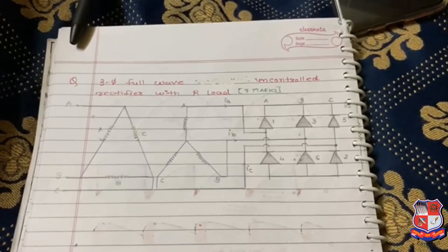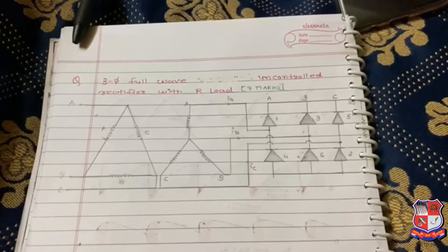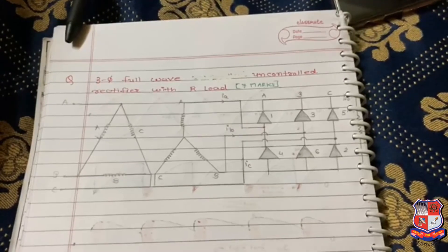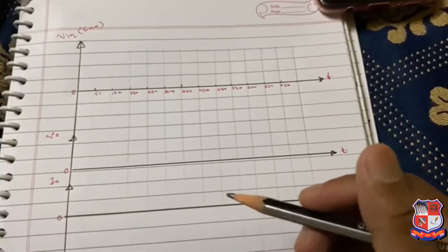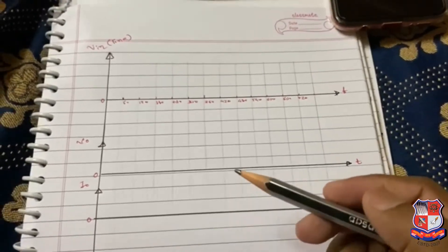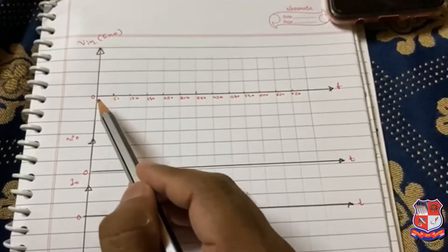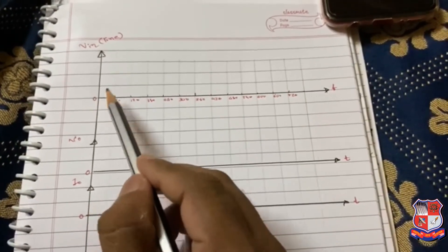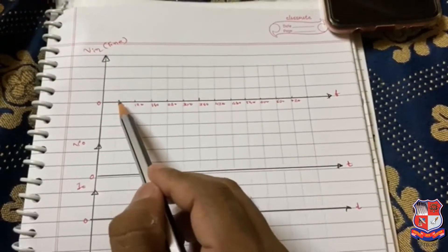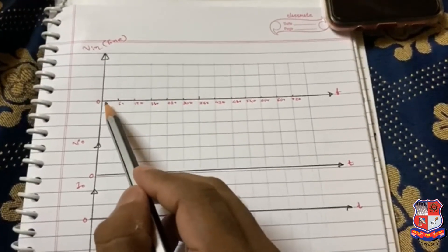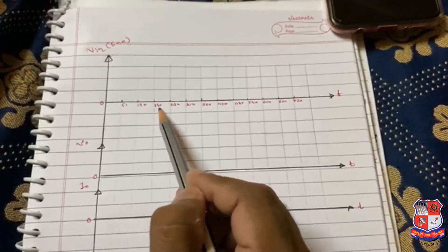Now we will see the waveforms of output voltage and output current, how to draw it. First, divide the whole cycle in 60 degree intervals.